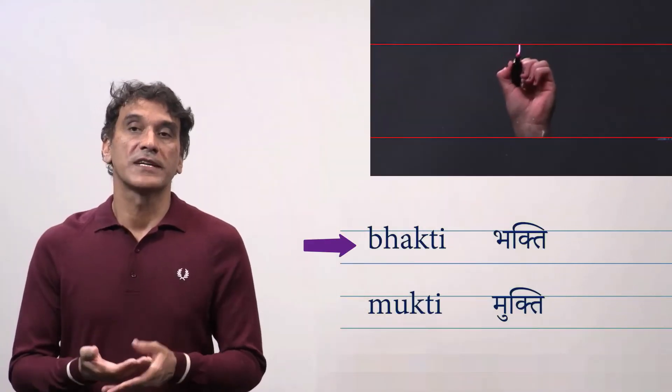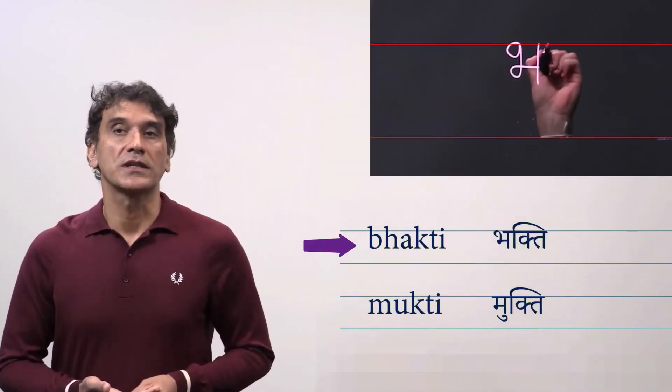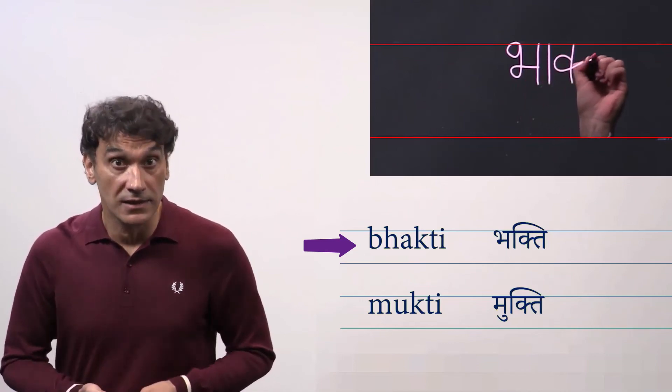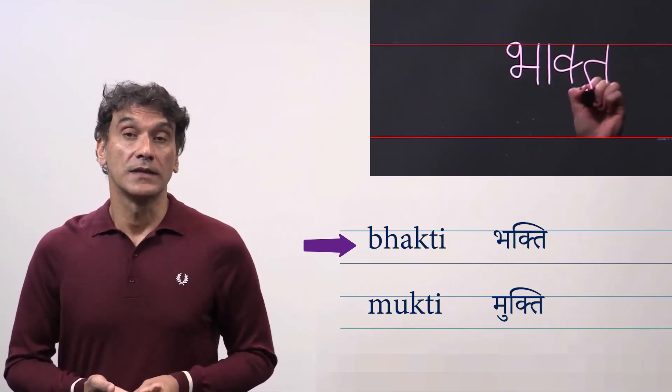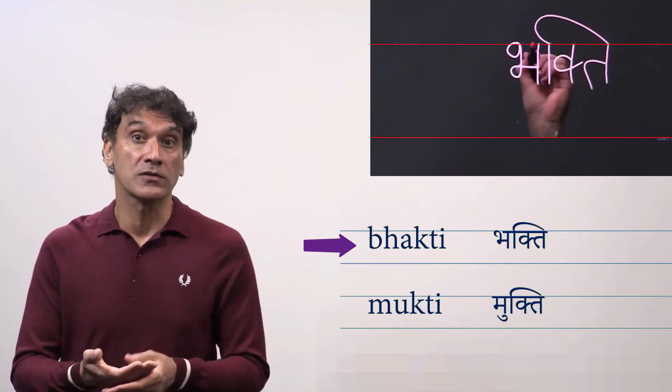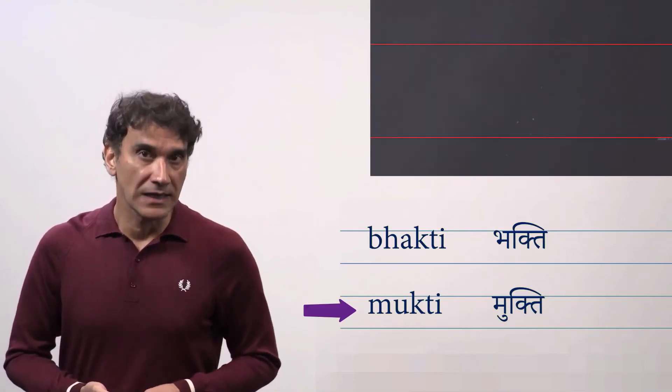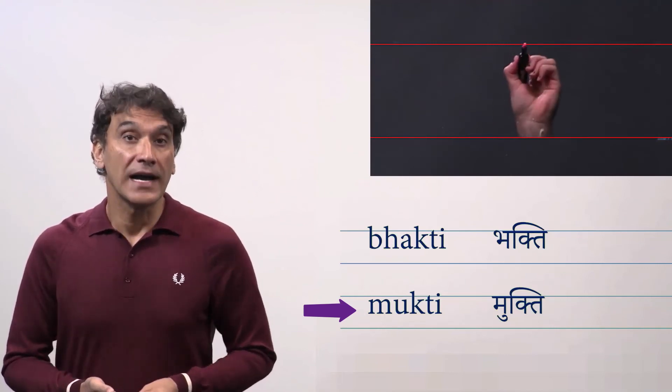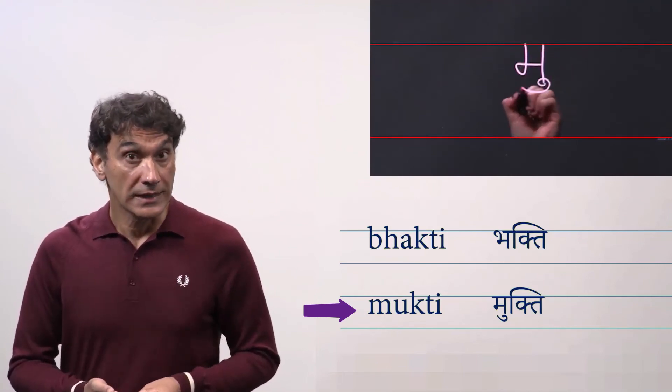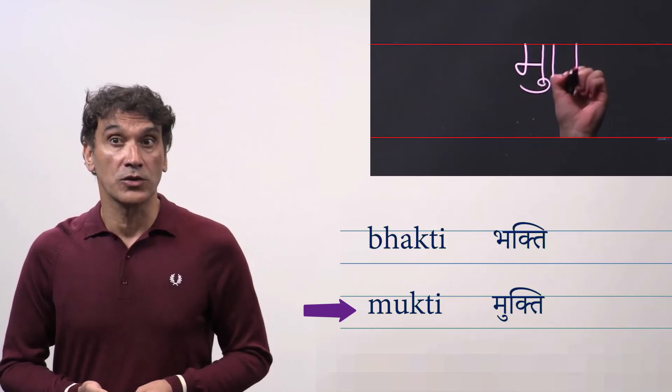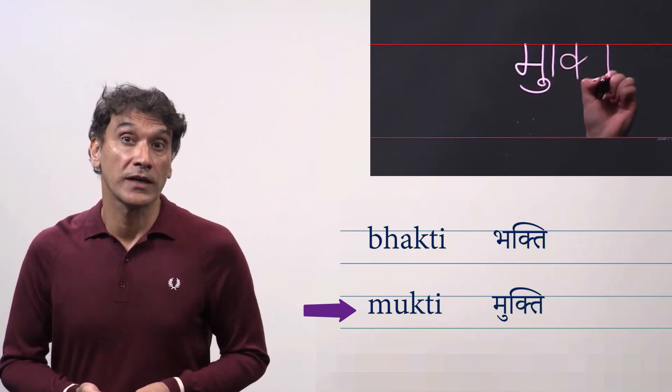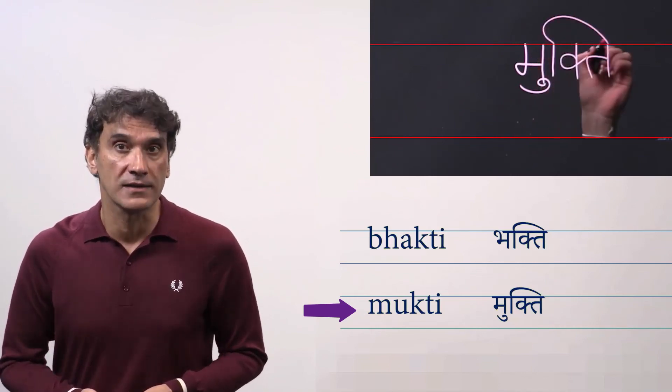The first word is bhakti. That means devotion. You write bha, then the consonant cluster kta and the short i. The short i will go before the consonant cluster. Bhakti. Similarly mukti meaning salvation. You write ma as usual with the short u. Then the consonant cluster kta with short i. And here again the short i will go before the entire cluster.